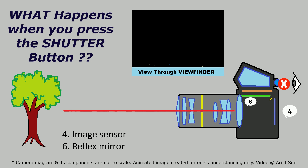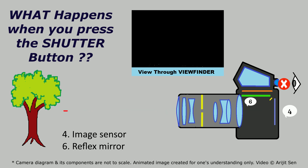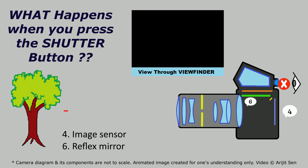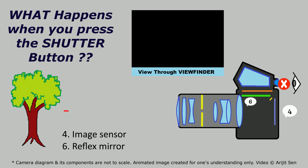Now coming back to the mechanism — you can recall the clicking sound when you press the shutter button. This is when the changes take place in the camera. Since the mirror is now not reflecting the light rays upwards, there is no reflection taking place inside the pentaprism, hence no light reaches the viewfinder. Therefore you cannot see anything through it — all you can see is a black screen for the fraction of a second, or the time for which you have set the shutter speed.